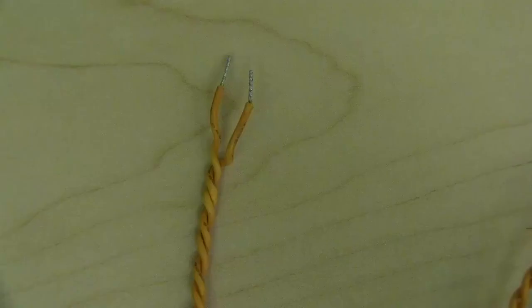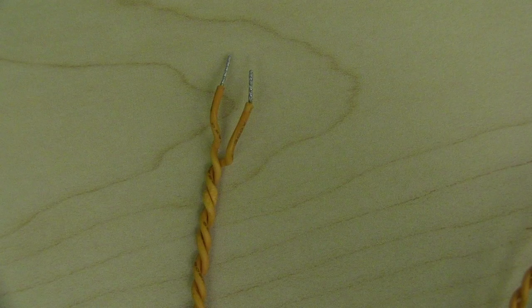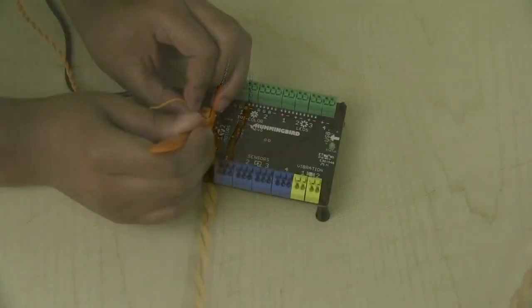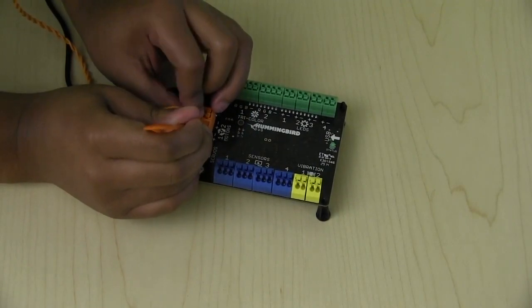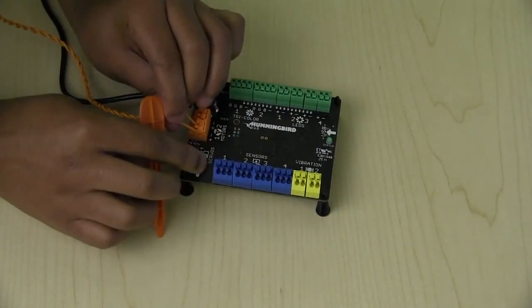To connect a motor, connect one of the two orange wires into the plus terminal and the other into the negative terminal. Again, just like the vibration motors, it does not matter which wire is plugged in where.